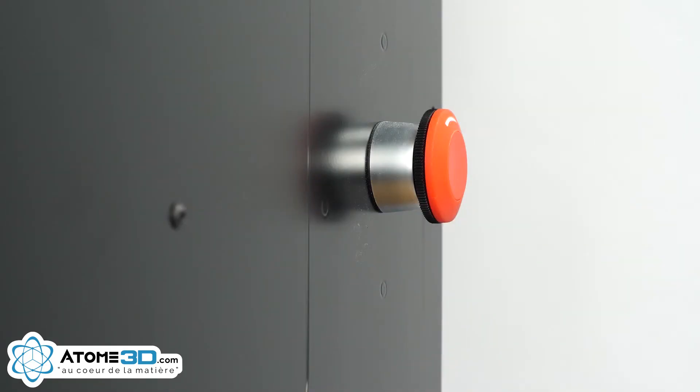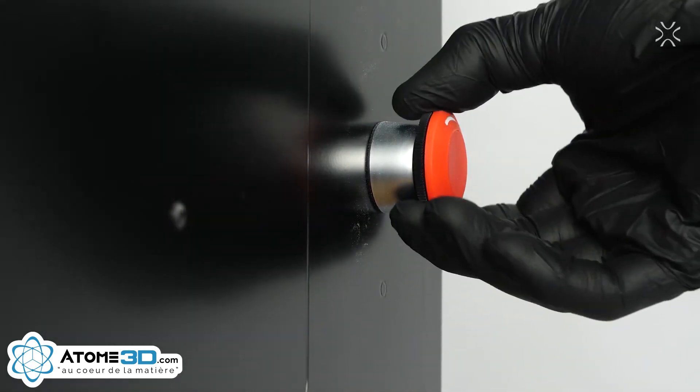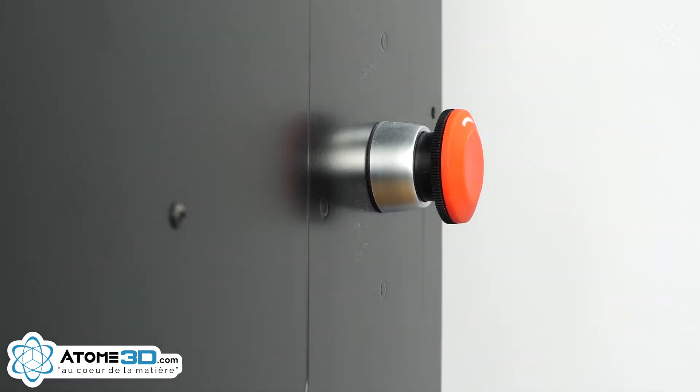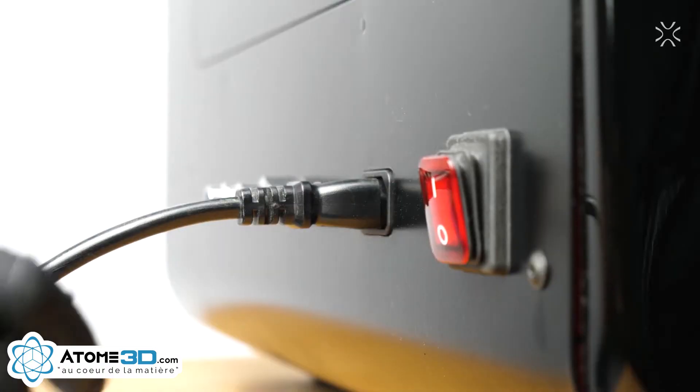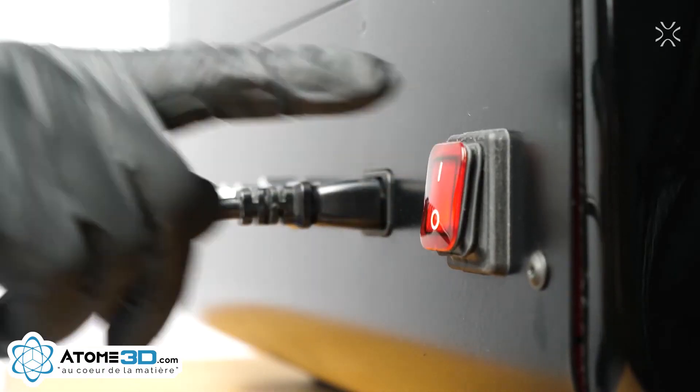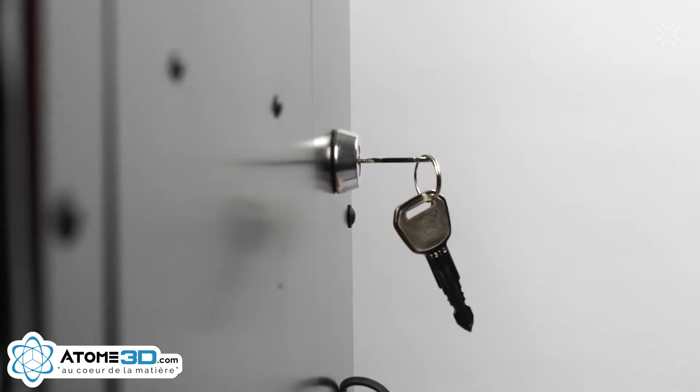To start printing with Cenerit Leesa Pro, you should check if the emergency stop button is released. If not, turn the button clockwise until it pops up. Turn on the printer using the power switch, and then turn on the ignition key clockwise.